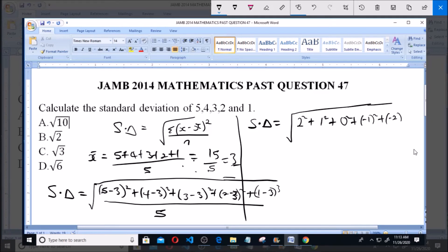So SD equals the square root of 4 plus 1 plus 0 plus 1 plus 4, all over 5. SD equals 4 plus 1 will give us 5, plus 1 will give us 6, plus 4 will give us 10.